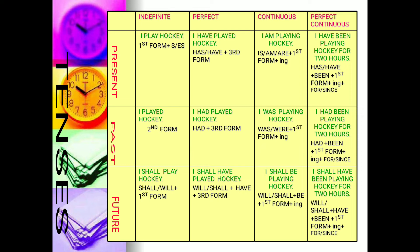Similarly in the future perfect, the rule is: if future, then 'shall' has to come. With 'shall' or 'will,' always use the first form. The first form of 'have/has/had' is 'have.' So: I shall have. With 'have,' the main verb is always in the third form — so 'played.' Therefore: I shall have played hockey. The game rule is: I have played hockey, I had played hockey, I shall have played hockey.